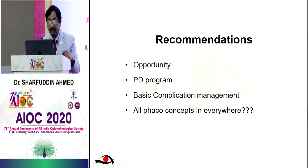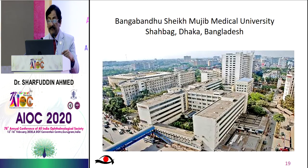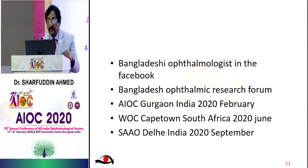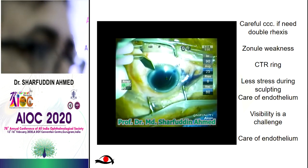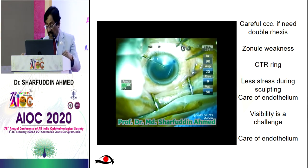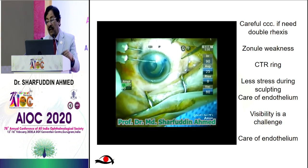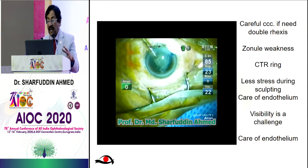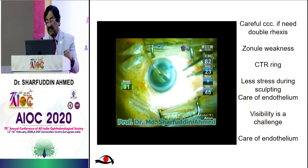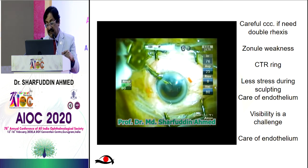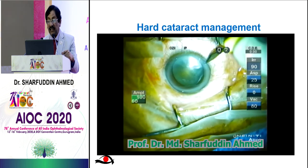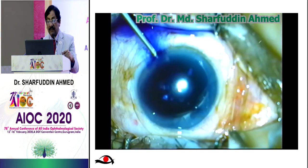Recommendations include opportunity, a PD program, basic complication management, and all Faco concepts everywhere. In Bangladesh ophthalmology, perform a careful CCC; if needed, double rhexis. If there is the Argentine flag sign and zonular weakness, use a CTR ring. Apply less stress during sculpting, and care of the endothelium is a must in case of hard cataract management.